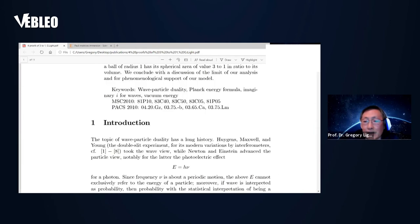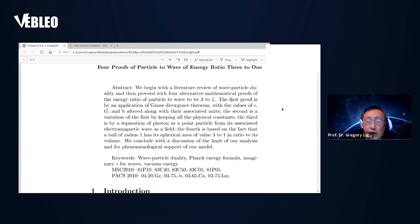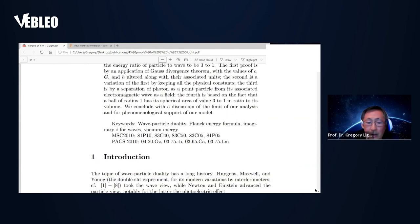So there are four proofs to establish three to one. The first one is by Gauss divergence theorem where I changed the units for the physical constants. The second one I stick to the constants. The third one is a standalone proof. The fourth one is the simplest: consider a ball of radius one, then its spherical area to its volume must be three to one.